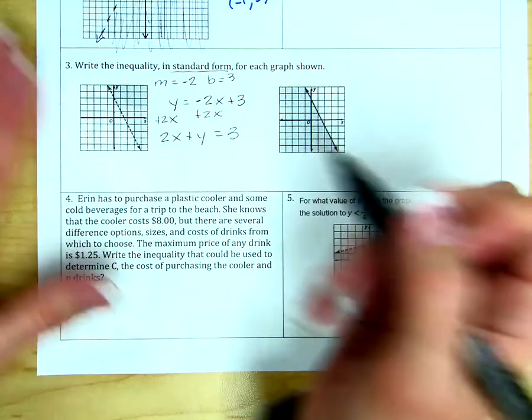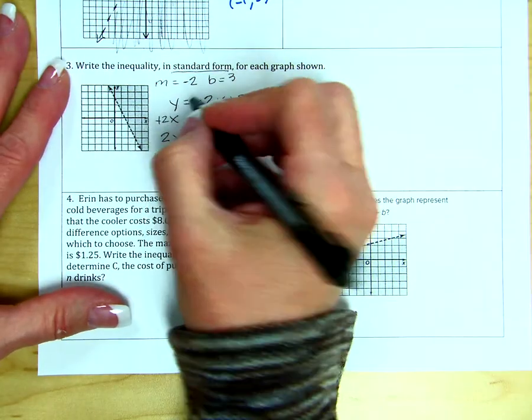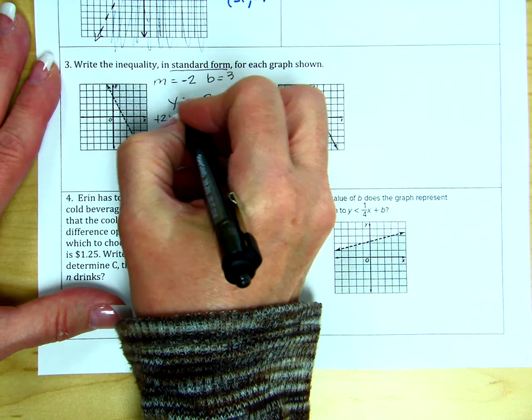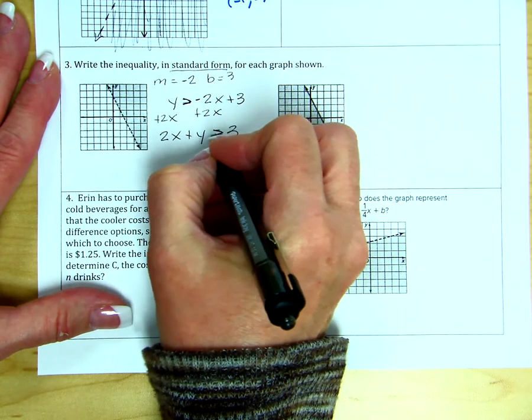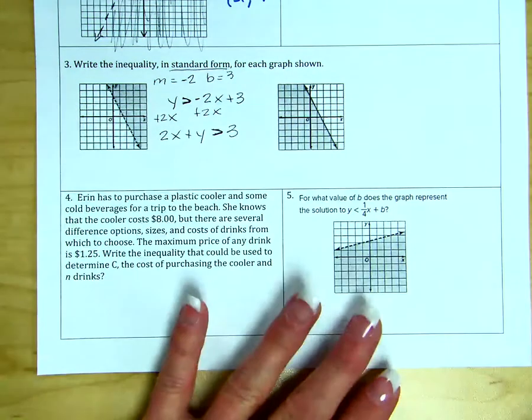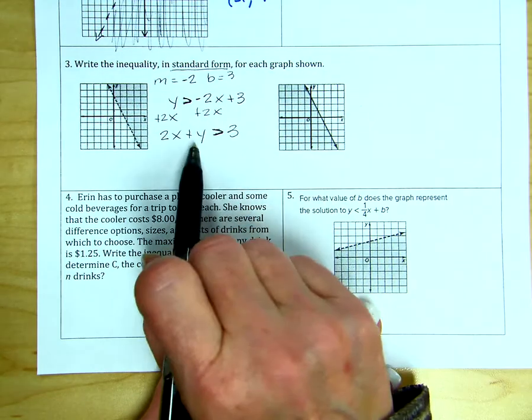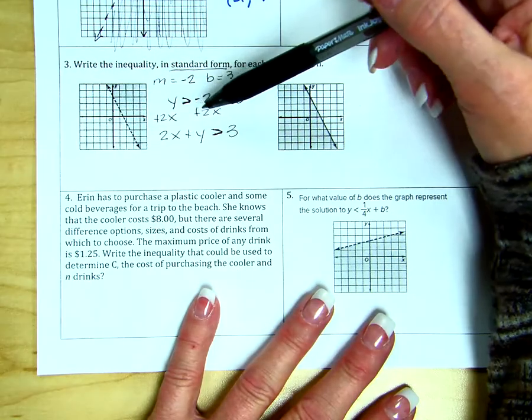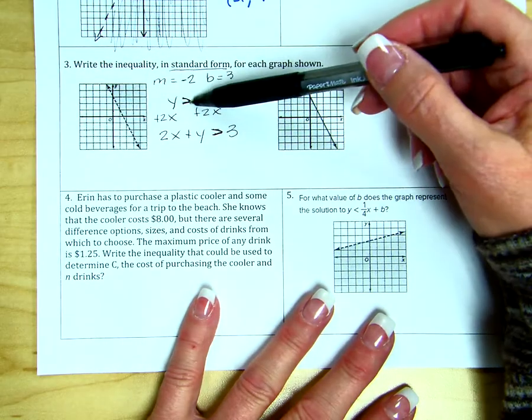For, whoops, and I said equals and I shouldn't have said equals. This is a dashed line shaded above, so this is actually greater than. So this should all be greater than. So that we get the inequality, not an equation. So because this is a dashed line, we don't have equals. Because it's shaded above, we get greater than.